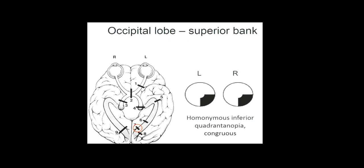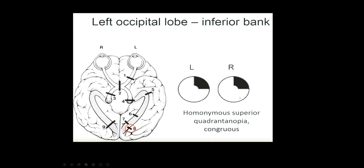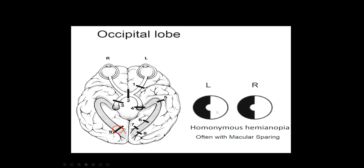If we get back to the occipital lobe, remember the posterior cerebral artery is the vascular supply. If the superior portion or the superior bank of the occipital lobe is involved, the patient will have a lower quadrant affected but it will spare macular vision. If the inferior bank is involved in a smaller PCA stroke, then the patient will have a superior quadrant affected with macular sparing. With a complete posterior cerebral artery stroke, the patient will have a contralateral homonymous hemianopia, and we may see macular sparing. Anytime you see macular sparing, think posterior cerebral artery stroke.